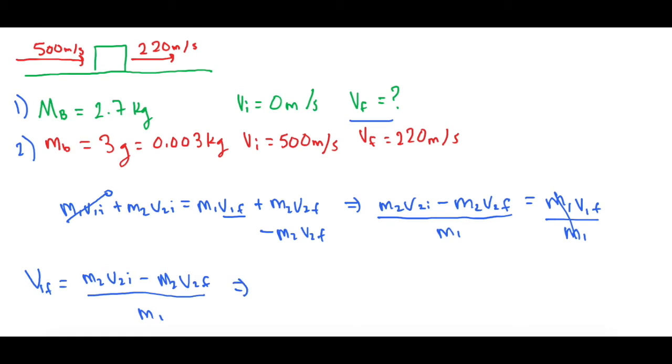So now when you plug those guys in, for this one we have 0.003 kilograms times its initial velocity times 500. And then we're going to minus the mass of the bullet, 0.003 times its final velocity, so 220 meters per second.